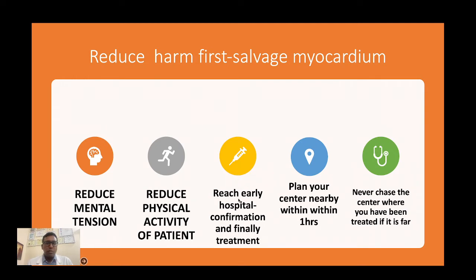Reach the hospital as early as possible — never neglect it and say you will go tomorrow morning or wait for symptoms to increase. The earlier you go and start treatment the better. It is best to plan a nearby centre reachable within one hour — this is the golden hour, where both primary PCI and thrombolysis have a good response. Never chase a cardiologist who is very far away; it is not essential to reach the same doctor who treated you before. Go to the nearest available centre to get it confirmed and treated.